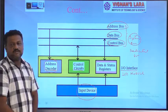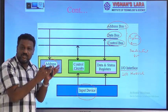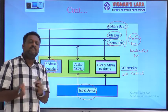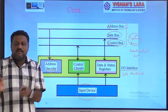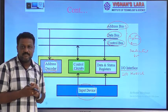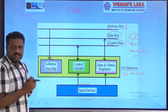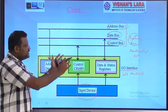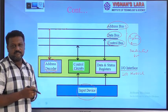The address decoder receives addresses from the processor via the address bus. When the CPU communicates with an I/O device, it first generates the address of the corresponding I/O device. That generated address travels over the address bus and is received by the address decoder in the I/O module. The address decoder then decodes that address.